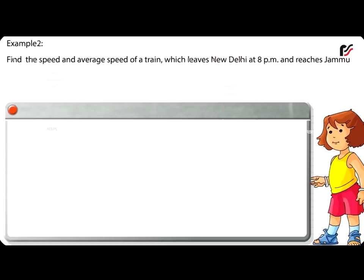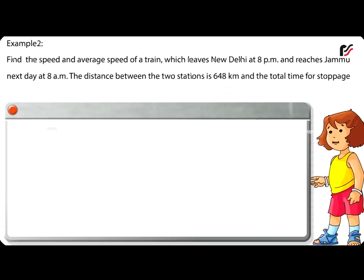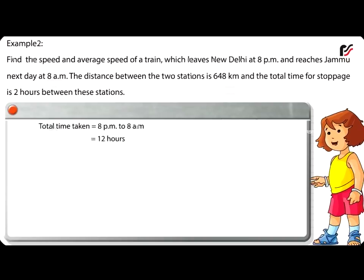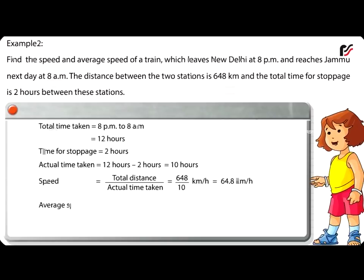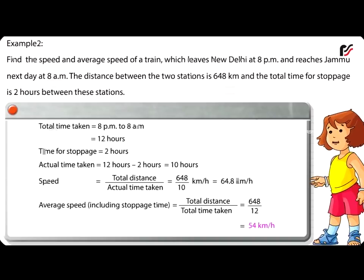Example 2: Find the speed and average speed of a train which leaves New Delhi at 8pm and reaches Jammu the next day at 8am. The distance between the two stations is 648 kilometres and the total stoppage time is 2 hours. Total time taken is 8pm to 8am, which equals 12 hours. Time for stoppage equals 2 hours. Actual time taken equals 12 minus 2, which equals 10 hours. Speed equals total distance divided by actual time taken: 648 divided by 10, which equals 64.8 km/h. Average speed including stoppage time equals total distance divided by total time: 648 divided by 12, which equals 54 km/h.